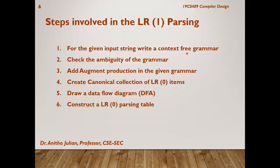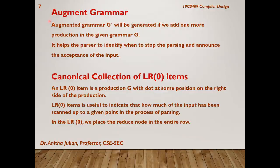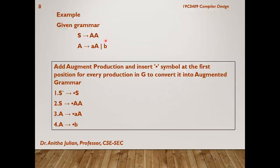We are not going to take a raw input string and proceed, because our idea here is to understand what the LR parsing method is, so we will concentrate on that. We will not spend time writing the grammar or doing ambiguity removal. We will assume the grammar is given. The example grammar given to us is: S → AA, A → aA, and A → b — three productions.